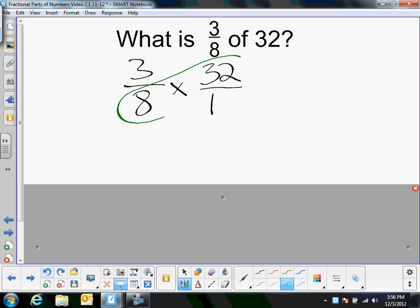So I'll look at eight and 32 and ask myself, do they have any common factors? And they do. Eight and 32 can both be divided by a few different numbers. The largest of which is eight, so eight goes into both. Eight goes into eight once, and eight goes into 32 four times.